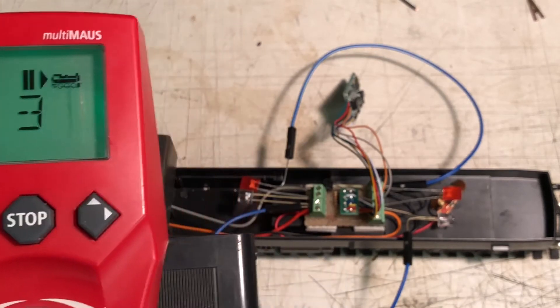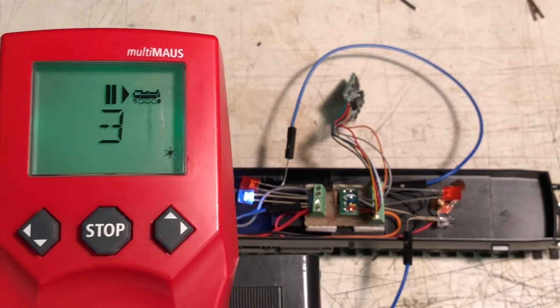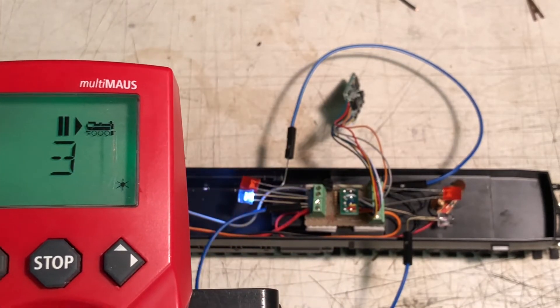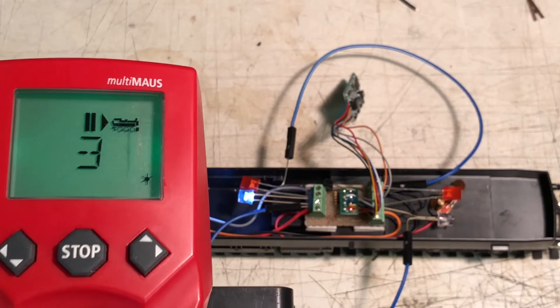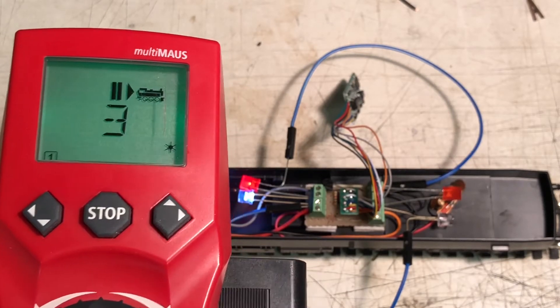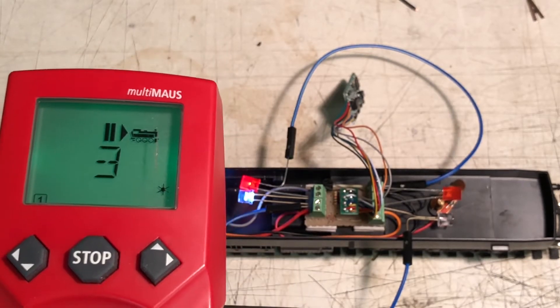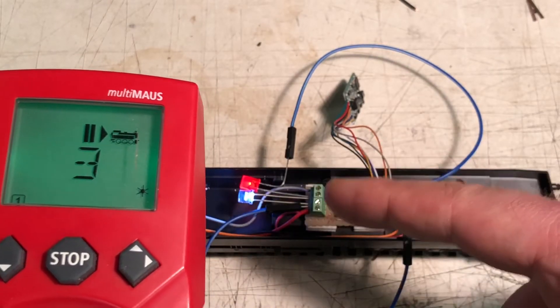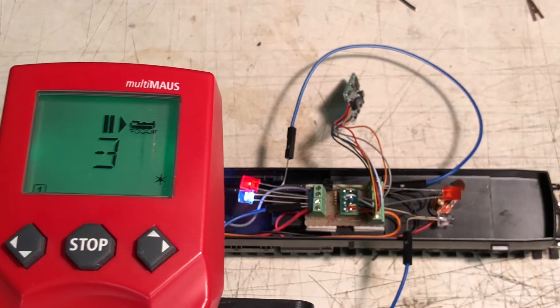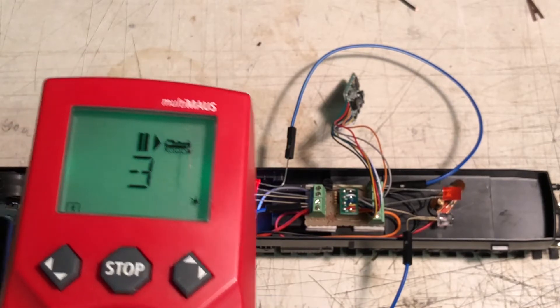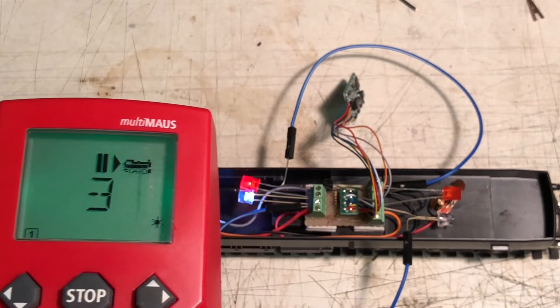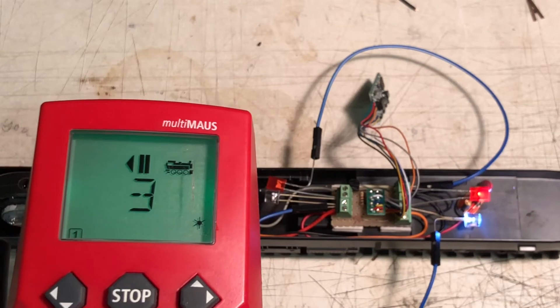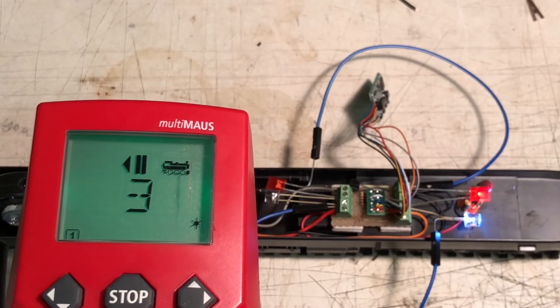Turning function 0 on turns the headlights on, and function 1 will turn the tail lights on. Obviously just pretend that LED there, the red one, is the other end of the loco. And you change direction, of course you've got the other ones come on, or the other direction.